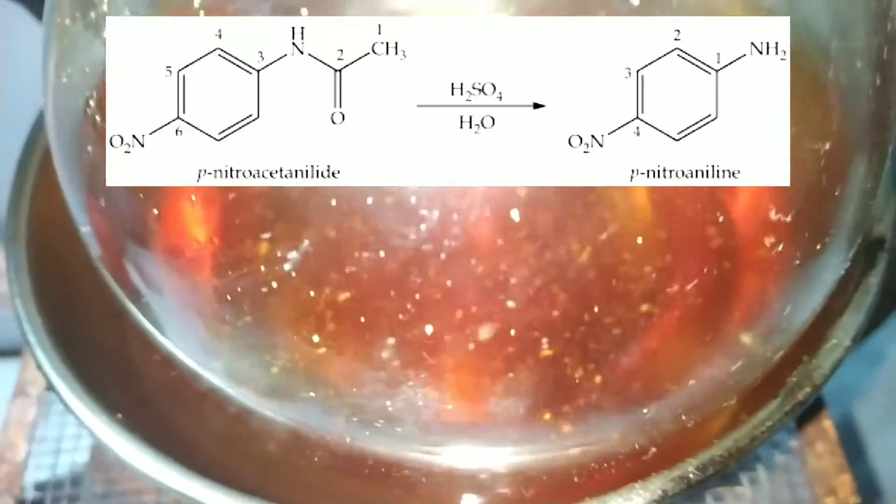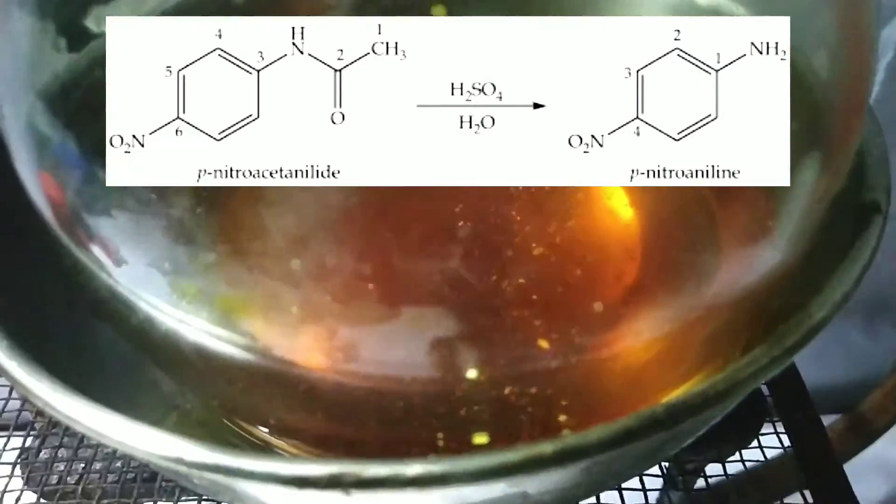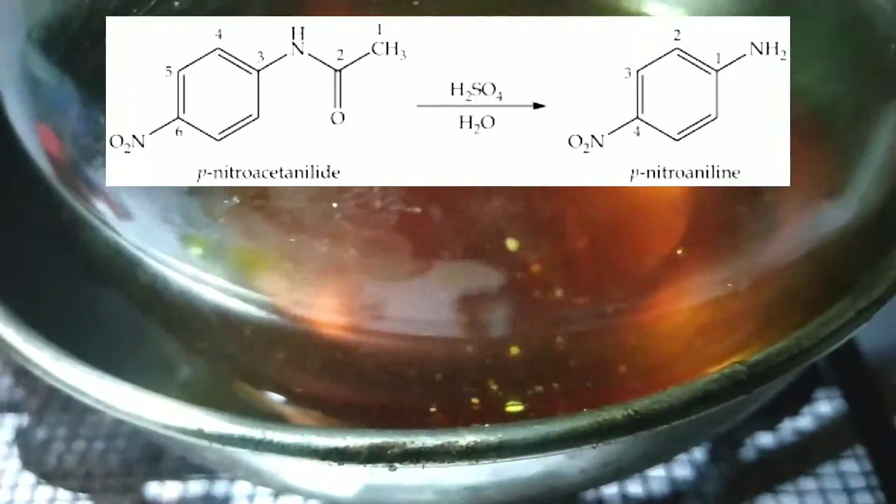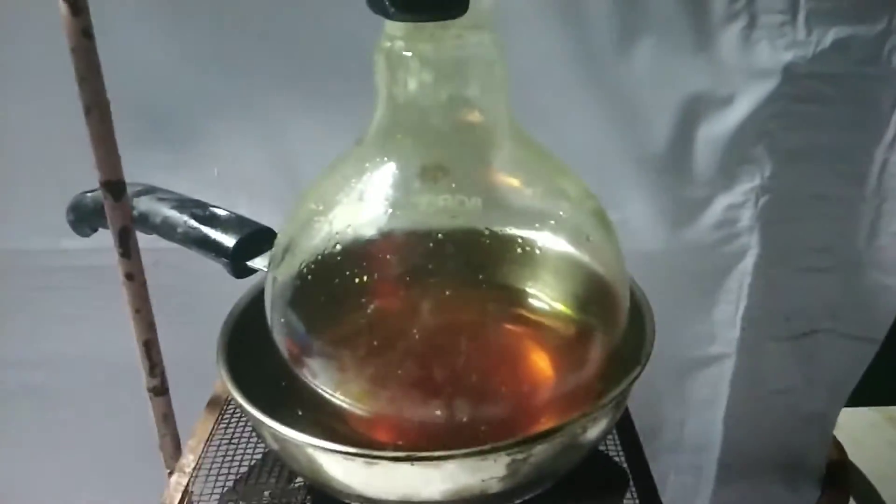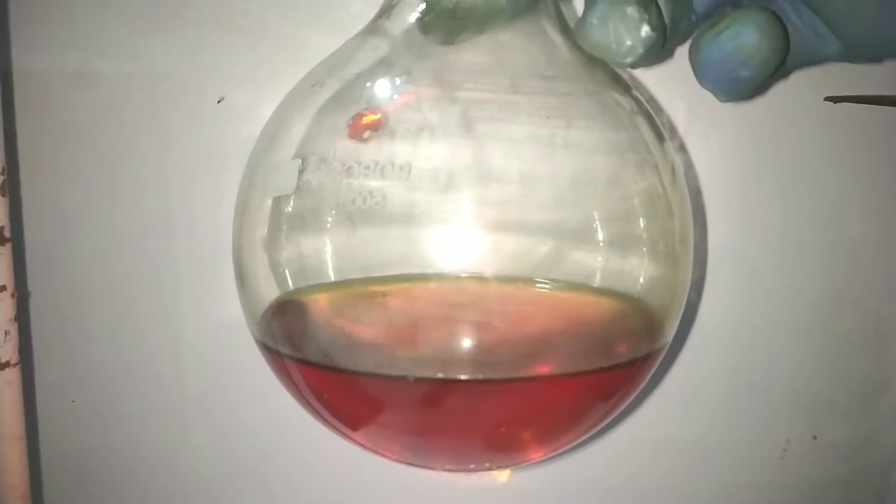The paranitroaniline is now present in the liquid as the sulfate form. After everything gets dissolved, we keep heating the flask for about 2 to 5 more minutes and then remove the flask from the oil bath.